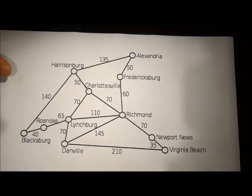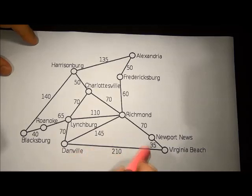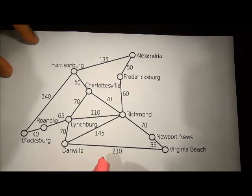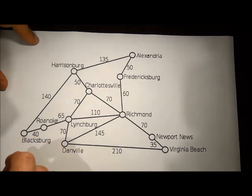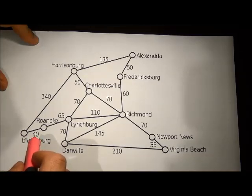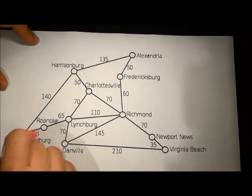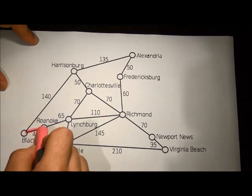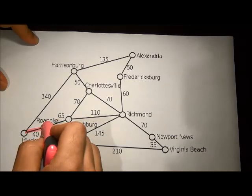The problem says we need to connect all of these cities together using the shortest distance. The minimum spanning tree method tells us that in order to solve these problems, we need to start with any of the nodes. Let's start with the first one, Blacksburg city, and then connect to the nearest node using the minimum distance.